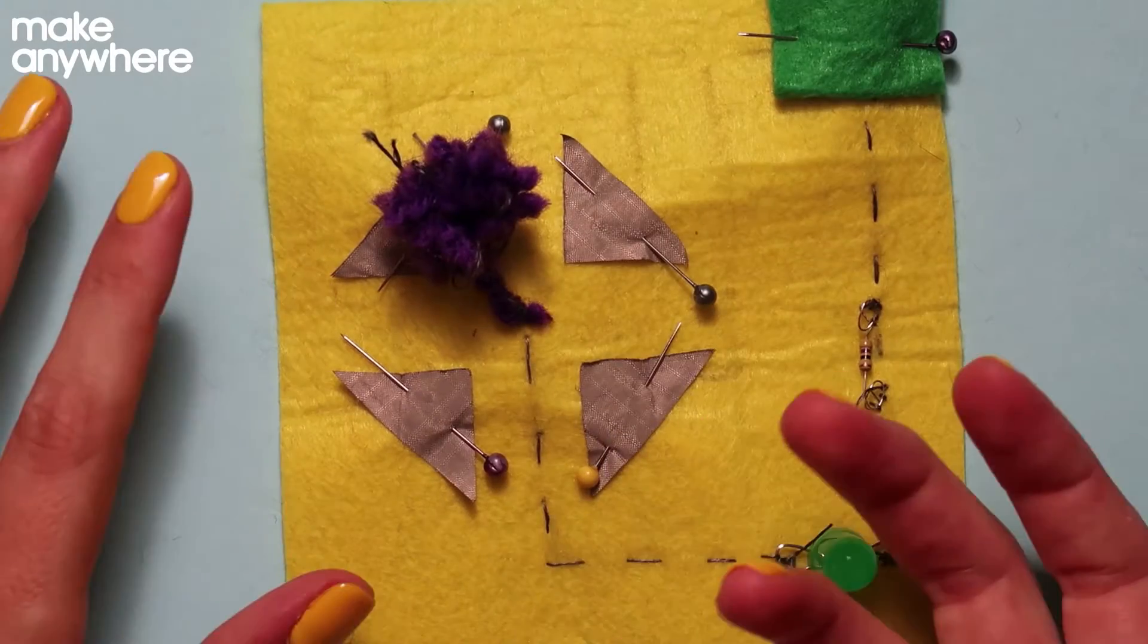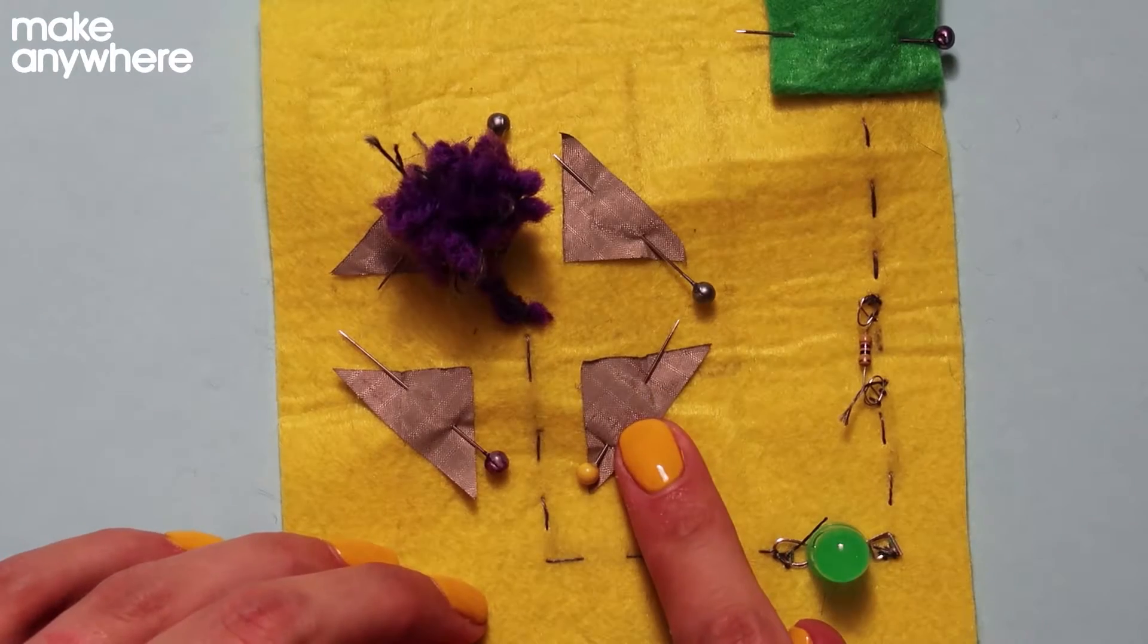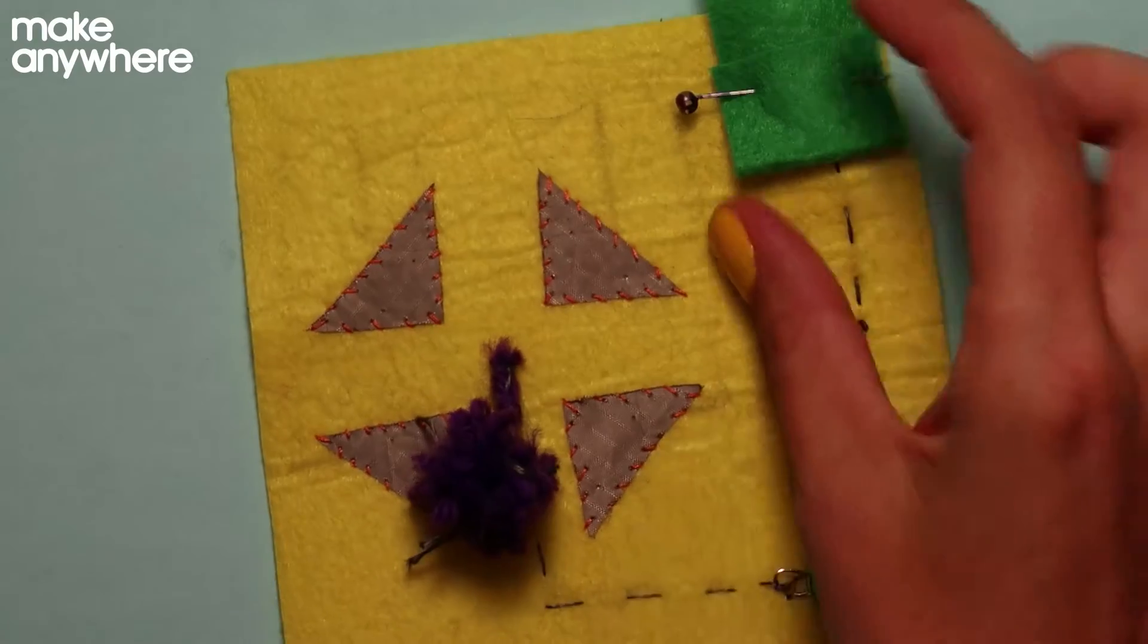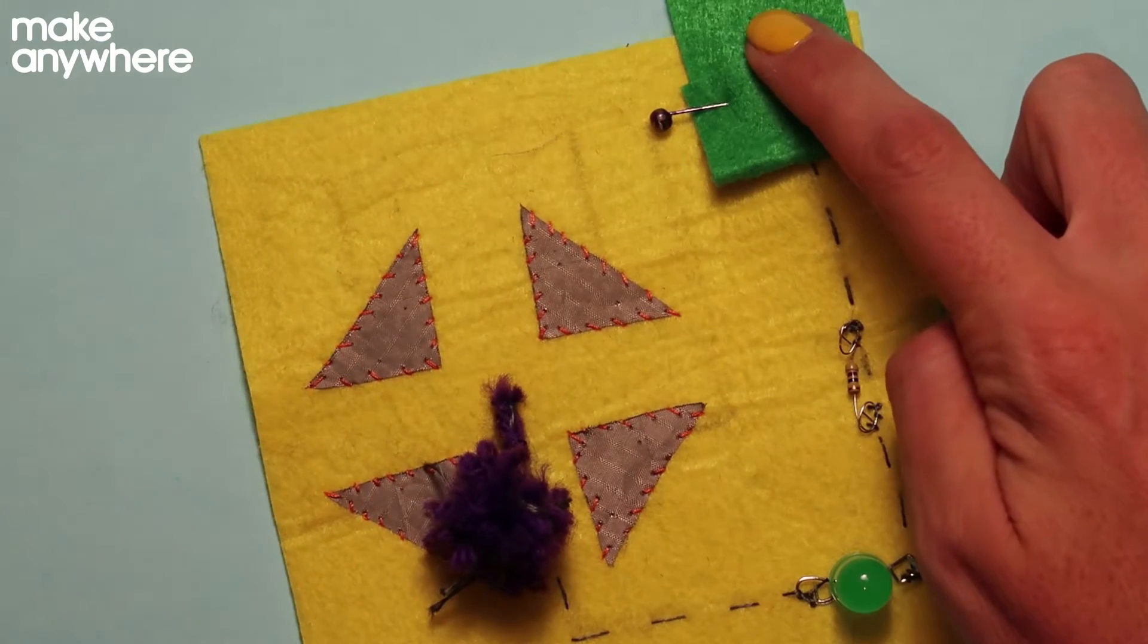Now what we need to do is using normal thread, stitch around each of these triangles of conductive fabric to stitch them down nice and securely. Now that all four of those are stitched down, we need to connect them up to the positive side of the battery holder.